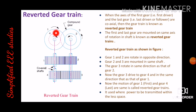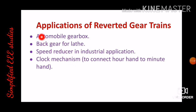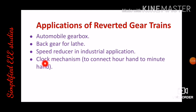Coaxial means objects rotating on the same axis. Gears 1 and 4 are a classic example — gear 1 is driver, gear 4 is driven, and both are located on the same axis. Applications of reverted gear trains include gearboxes in automobile systems, back gear in lathe machines, speed reducers in industrial applications, and clock mechanisms connecting the hour handle to the minute handle, where power transmission area is very limited.